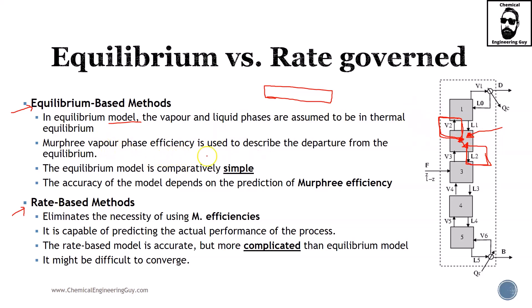Murphree's vapor phase efficiency is used to describe the departure from the equilibrium. We acknowledge this problem. Murphree stated an equilibrium concept or efficiency concept which will model the actual deviation from reality. The equilibrium model is very simple because it's the very basic equilibrium model plus an efficiency, and you get a model which is pretty straightforward.